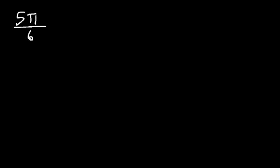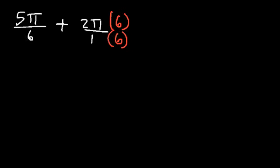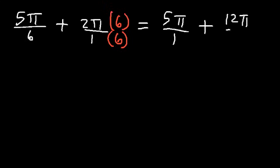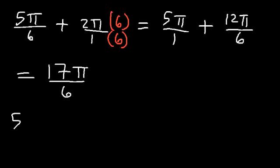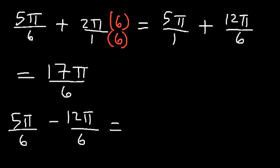Given the angle 5 pi over 6, find two coterminal angles — one positive, one negative. First, add 2 pi. We need common denominators, so multiply 2 pi by 6 over 6, giving 12 pi over 6. So 5 pi over 6 plus 12 pi over 6: 5 plus 12 is 17, so the positive answer is 17 pi over 6. Now subtract 12 pi over 6 from 5 pi over 6: 5 minus 12 is negative 7, giving negative 7 pi over 6 as the negative coterminal angle.